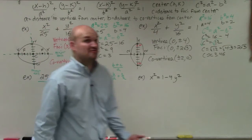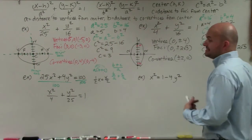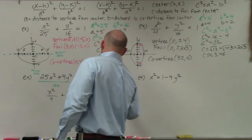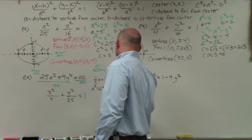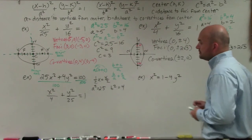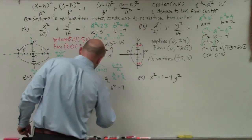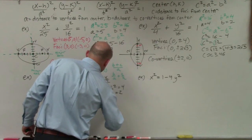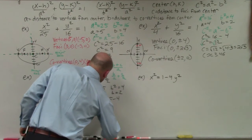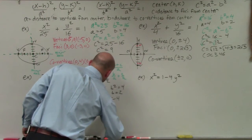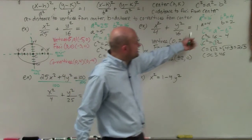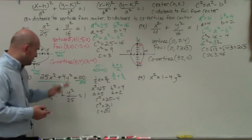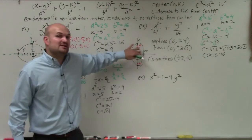Now I can easily identify: A² = 25 and B² = 4, so A = 5 and B = 2. For C: C² = 25 − 4 = 21, so C = √21. I can't simplify √21 further, so I leave it as is. Notice A² is under y, so this is a vertical major axis — same as the previous problem.